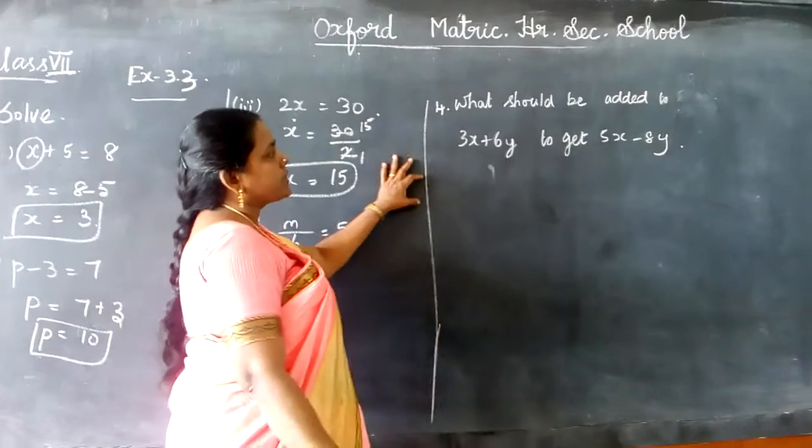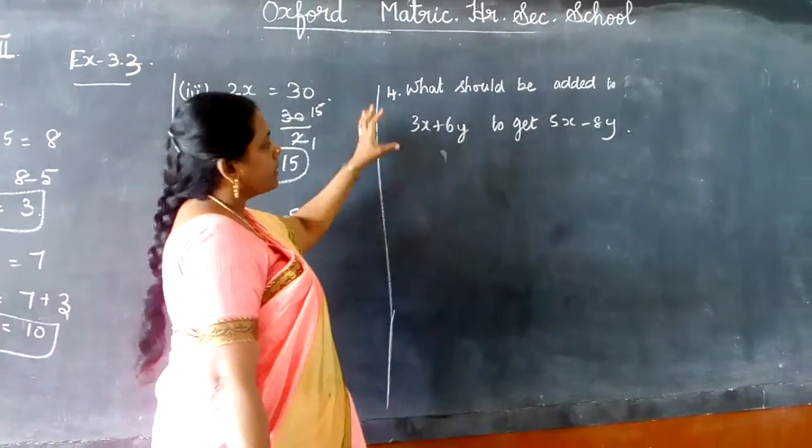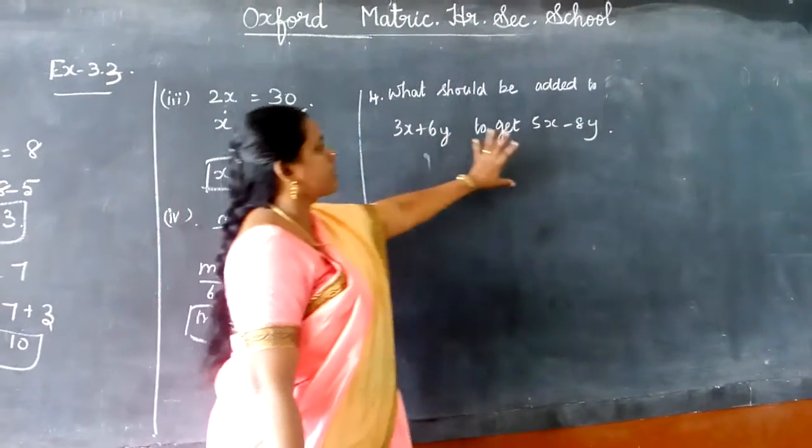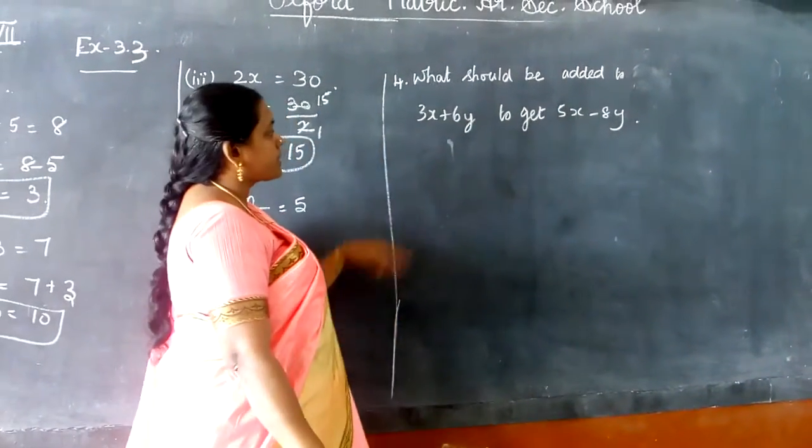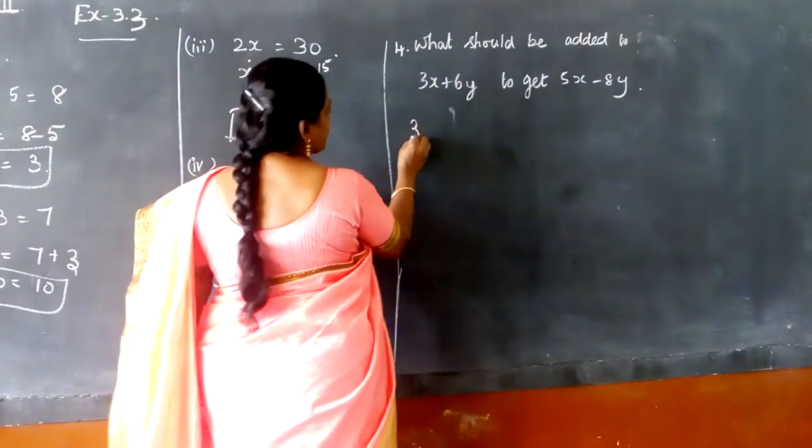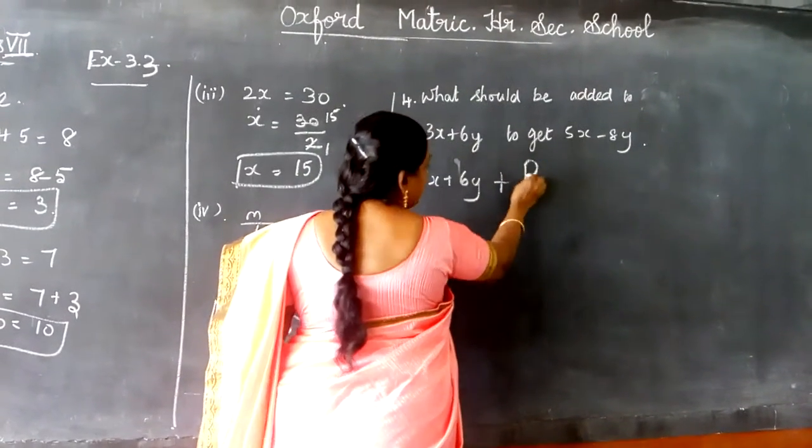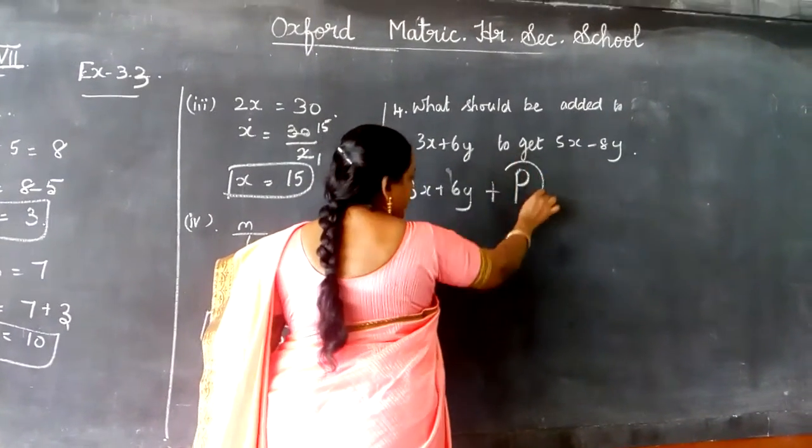Now, the fifth question is, what should be added to 3x plus 6y to get 5x minus 8y? So what we have to do is, 3x plus 6y plus t equals 5x minus 8y, where t is the unknown variable which I am going to find out.